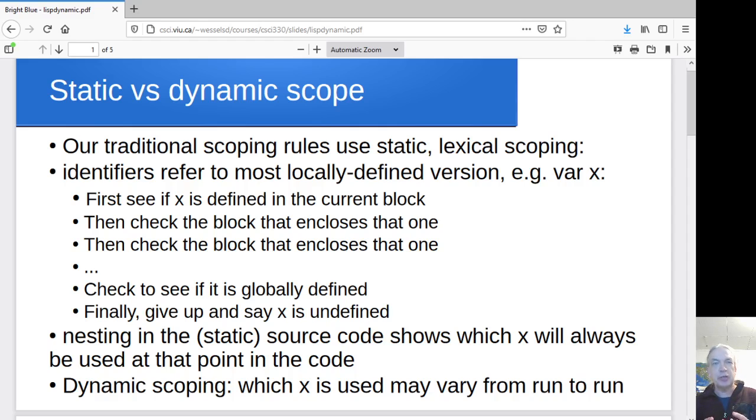But you've got this sort of structure where you're going from the outside, the global into narrower and narrower and narrower local scopes. So this is the idea of static scoping, where you can look at the structure of the code and tell which variable is going to be used by any call in the code.